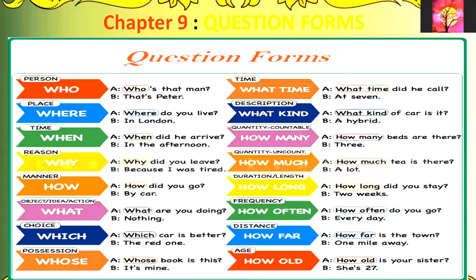When the answer required needs to show duration or length, then we use the question word 'how long.' For example: 'How long did you stay?' — 'Two weeks.' When the answer needs to show frequency, then we use the question word 'how often.' For example: 'How often do you go?' — 'Every day.' When we need to show distance, we use the question word 'how far.' For example: 'How far is the town?' — 'One mile away.' When we need to show a sense of age, then the question word used will be 'how old.' For example: 'How old is your sister?' — 'She is 27.' In this way we have a variety of question words which can be used to form various different types of questions.